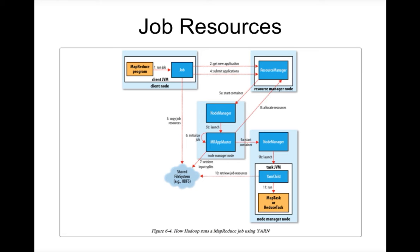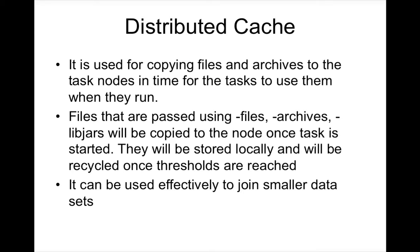Technically speaking, distributed cache is used for copying files and archives to the task nodes at runtime, so that tasks such as mappers or reducers can use them when they actually run. The files can be passed using the minus files, minus archives, and minus libjars options, and those will be copied to the node on which the task is running. Once the job starts running, they will be stored locally and recycled once thresholds are reached.